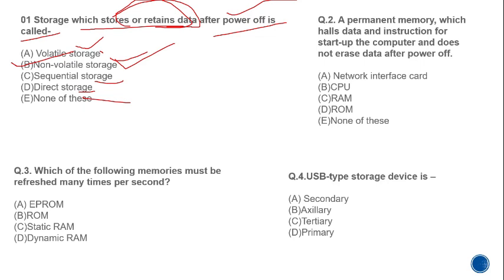MCQ 2: A permanent memory which holds data and instructions for startup of the computer and does not erase data after power off — what is it? RAM needs power so it's not permanent. The correct answer is ROM, which permanently stores startup instructions like date, time, and basic system data.